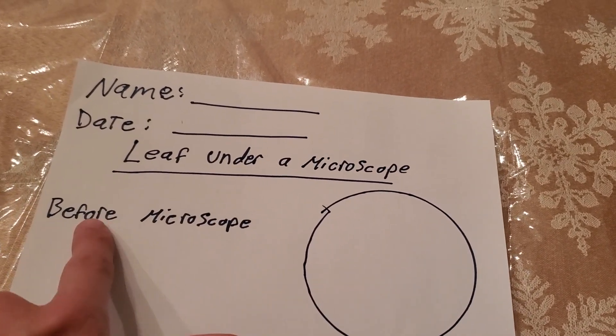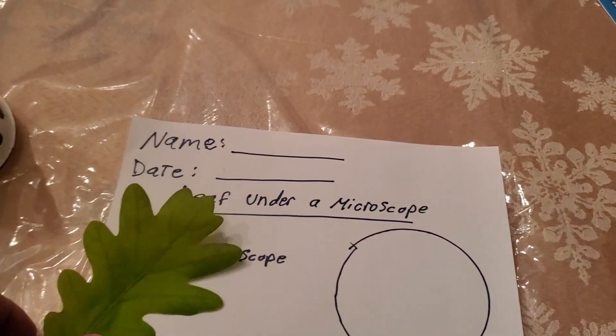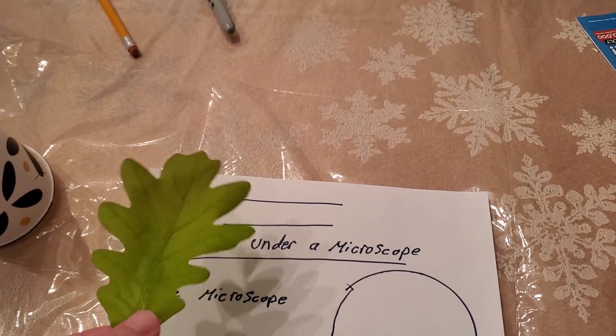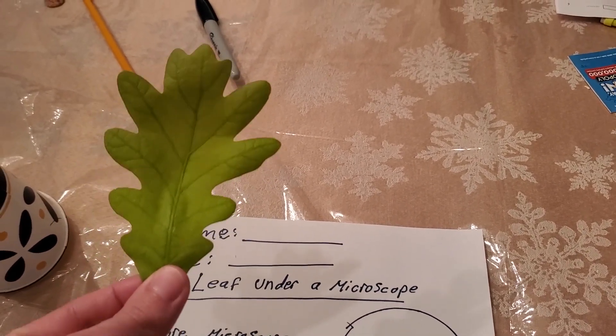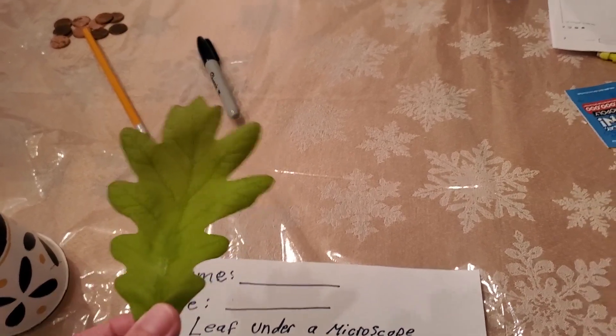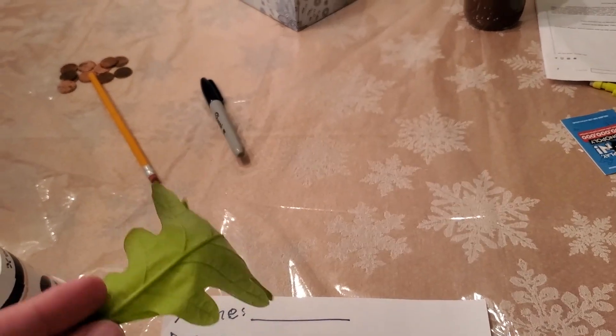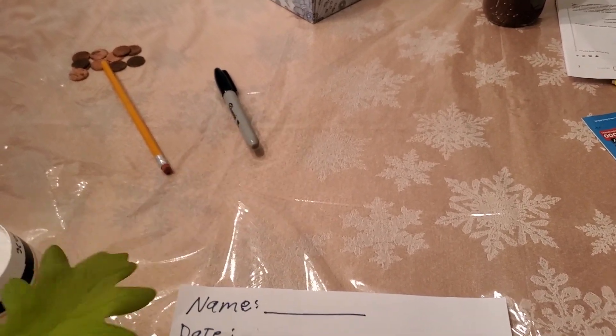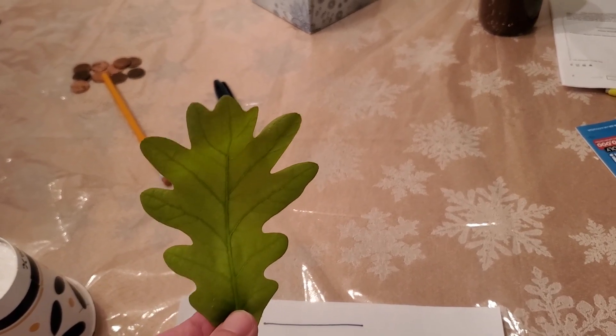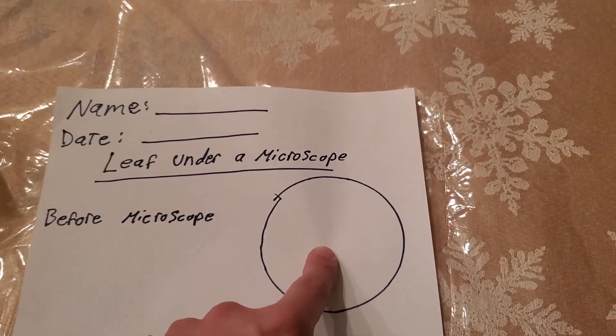And right next to it I wrote before the microscope. So what you're going to do is what this leaf looks like. The one that you pulled off a tree or plant or something. And if you weren't able to you can just draw the one I have right here. But I thought it would be fun if you're able to get outside a little bit. Not only get some fresh air but also find a different kind of leaf. So I thought it would be fun if we all had different leaves. So if you're able to, awesome. If not, that's okay. You can just draw the one I have. And you're just going to draw a picture of that in the circle.